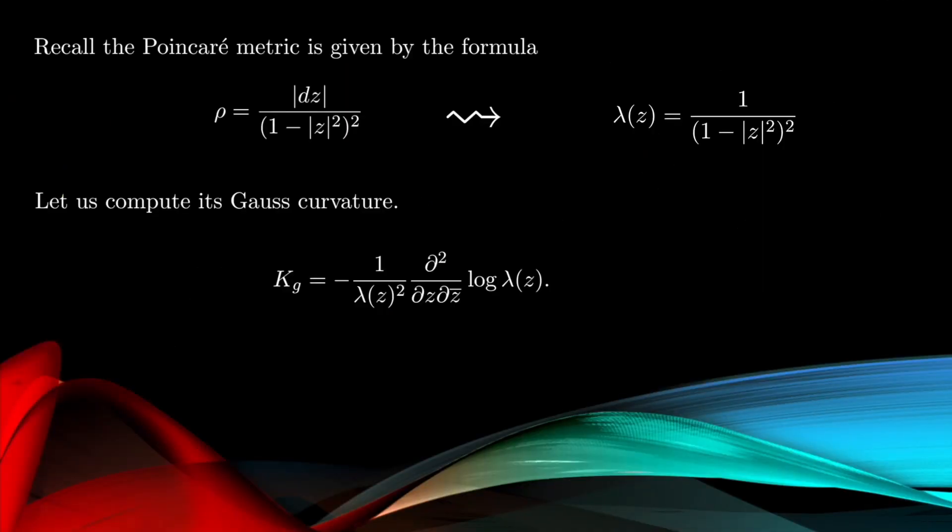So the point, just to illustrate these ideas—because it may seem complicated, but it actually is quite elementary—if we have the Poincaré metric, which is given by this formula here, then the lambda here is given by one over one minus mod z squared all squared.